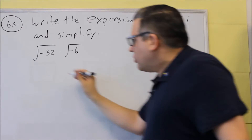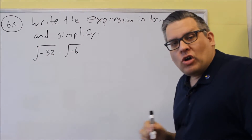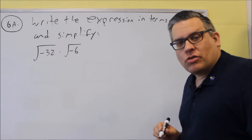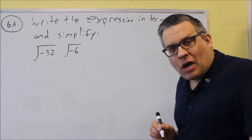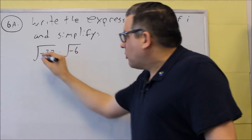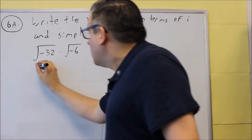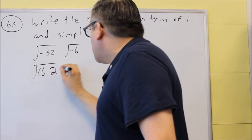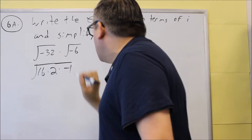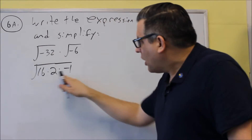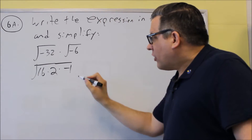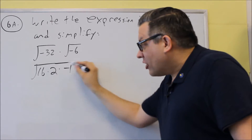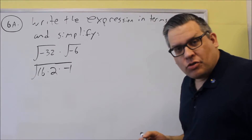So here's how we're going to do that. For 32, I want to think about the largest perfect square that divides evenly into 32, which is 16 times 2. So I'm going to rewrite the inside as 16 times 2, and I'm also going to put negative 1 out there as well, so I've got the negative there. I'm writing that separately because when I square root each of these individually, I'll get a square root of negative 1, which will turn into an i.